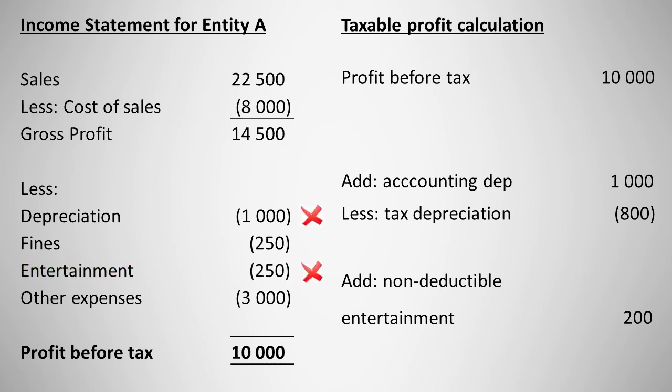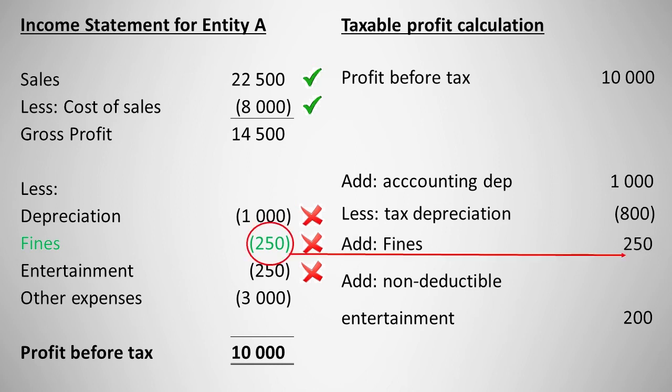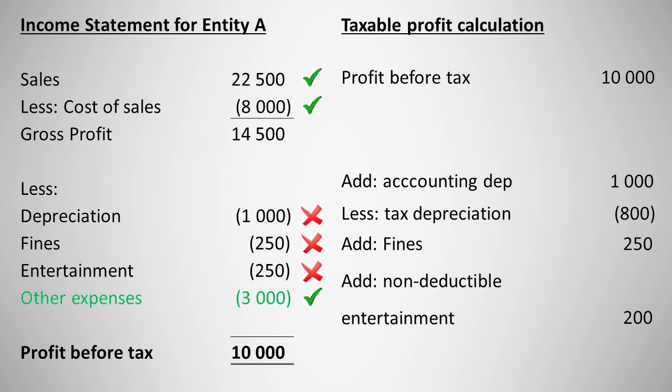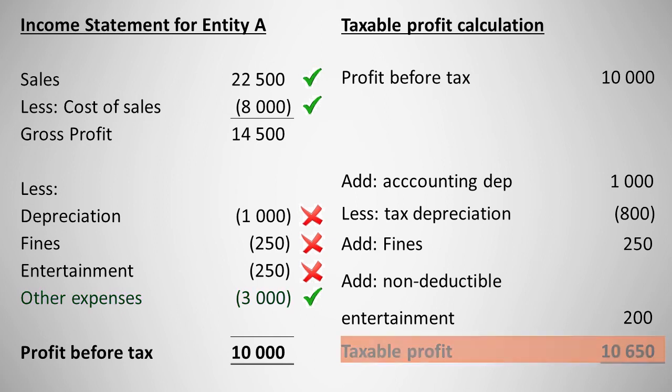Sales and cost of sales will be treated the same for tax purposes. However, fines are not deductible for tax purposes, and thus we need to add them back to the calculation of taxable profit. Other expenses will be treated the same for tax purposes in this example, so no further adjustment is required.